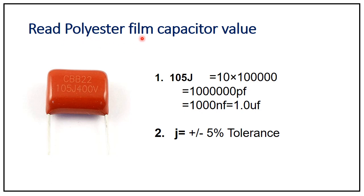To read a polyester film capacitor value — here the code printed is '105J 400V'. The digits 1, 0, 5 represent the first digit, second digit, and multiplier respectively, and J represents the tolerance. So we calculate 10 × 10⁵ = 1,000,000 picofarads.